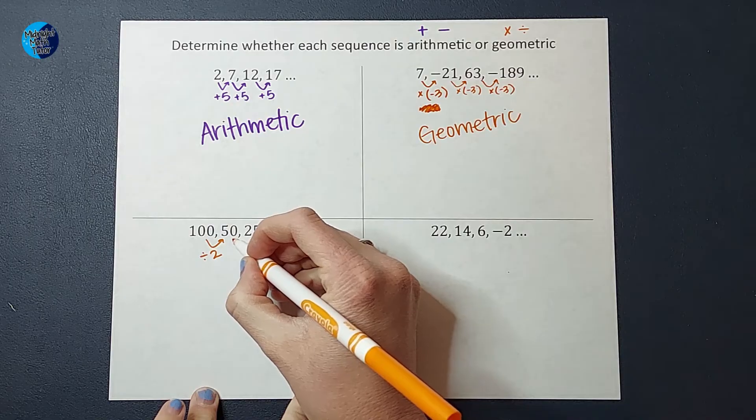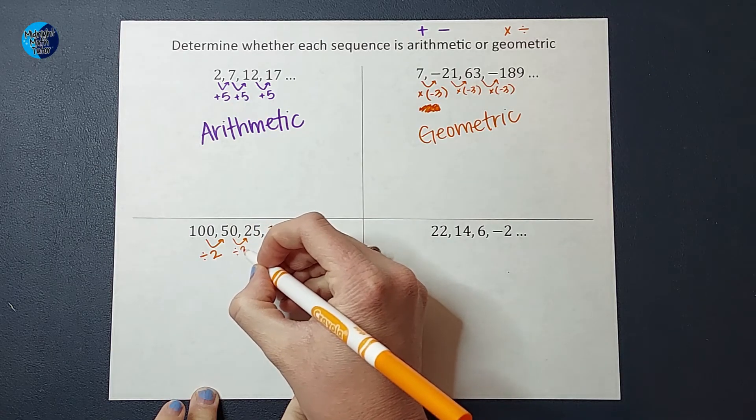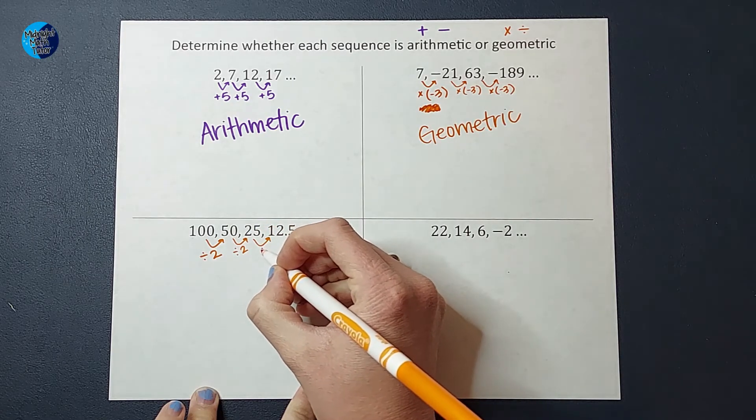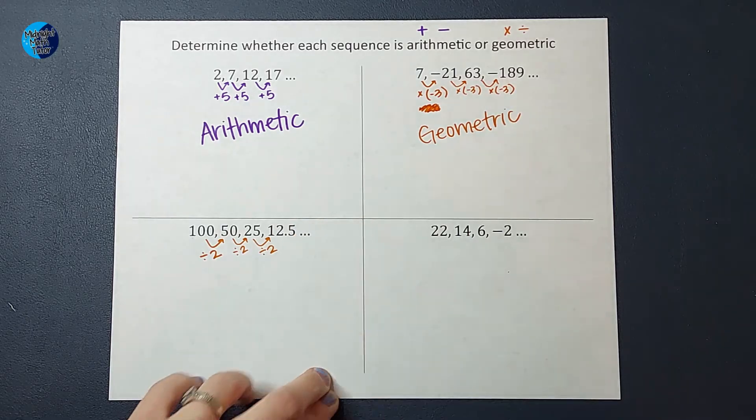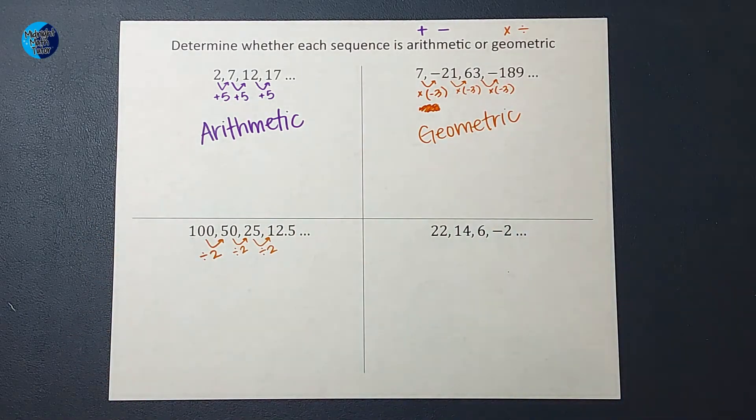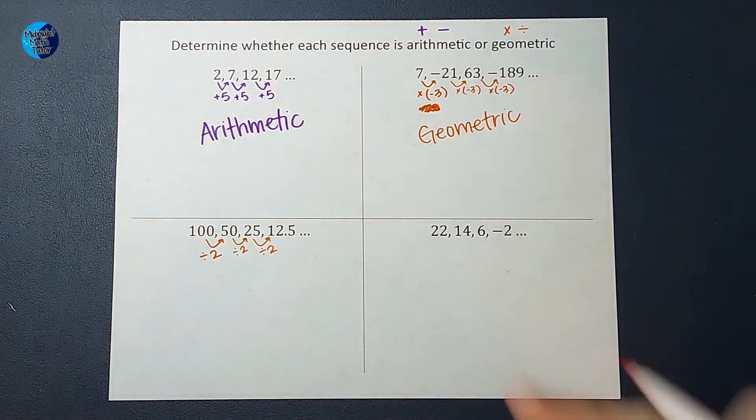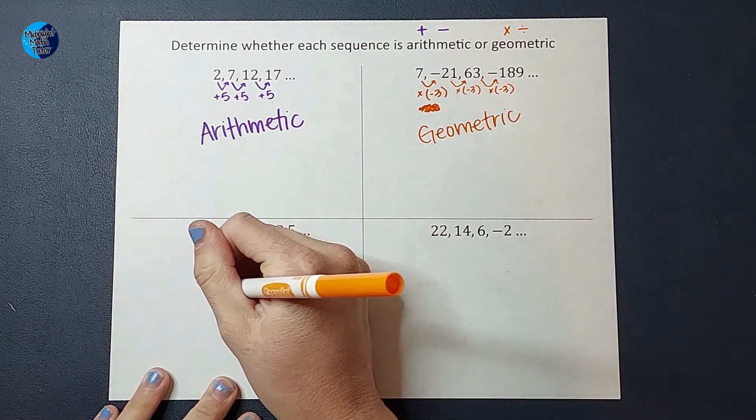So 100 divided by two is 50. 50 divided by two is 25. And 25 divided by two is 12 and a half. And again, it could keep going. So since we were dividing, this one is also geometric.